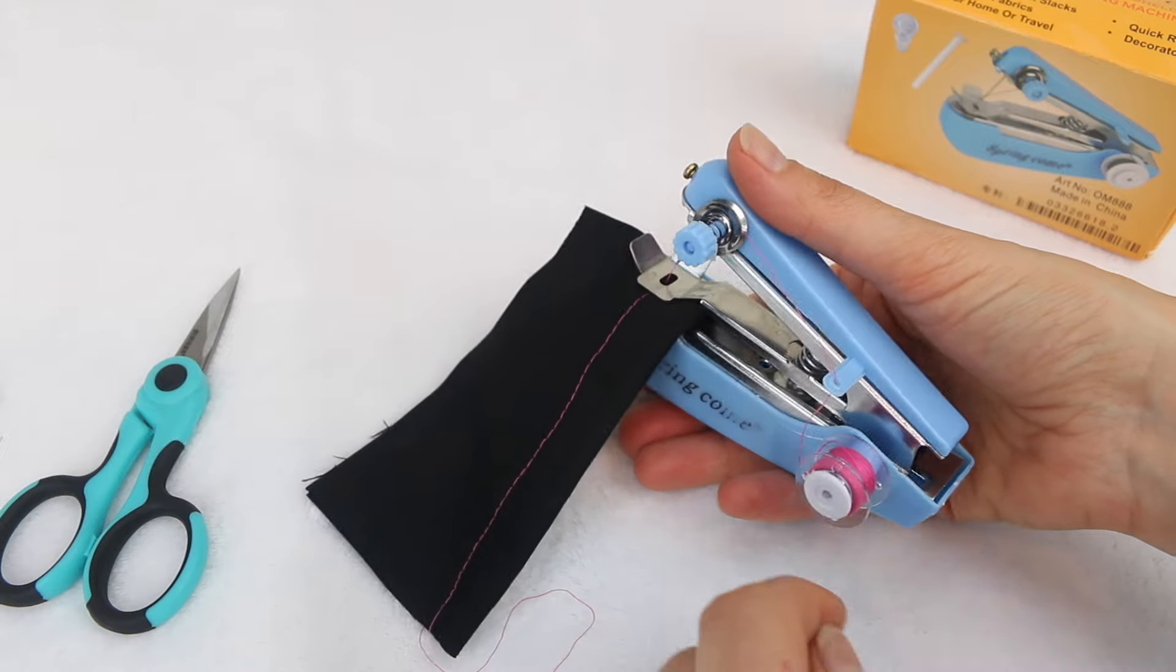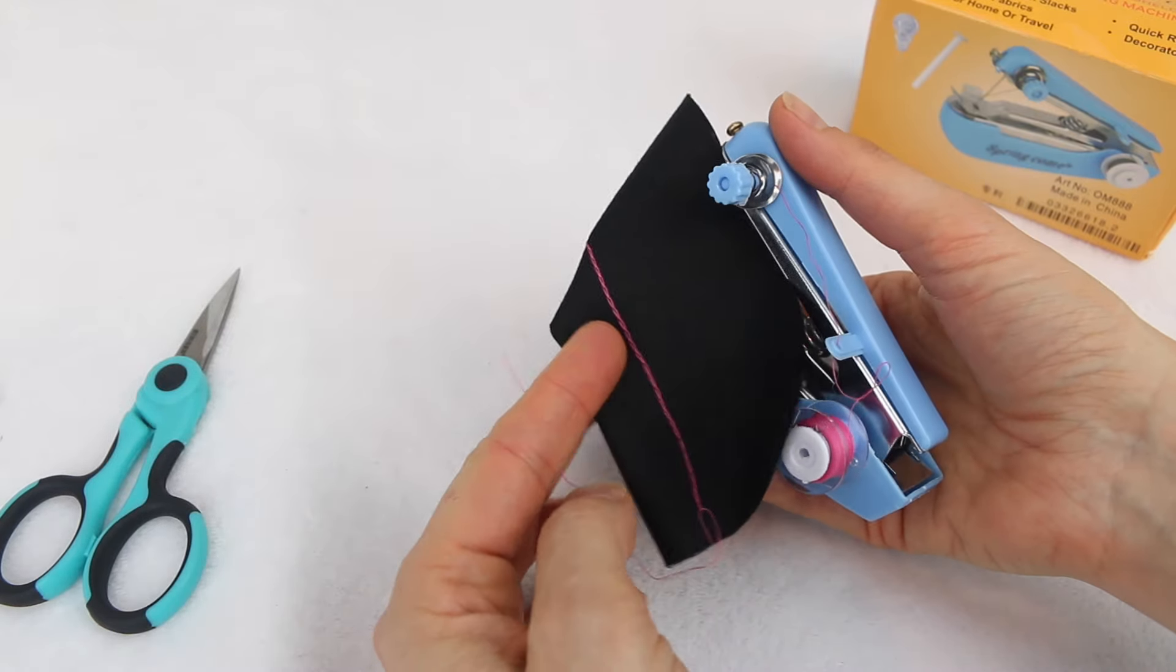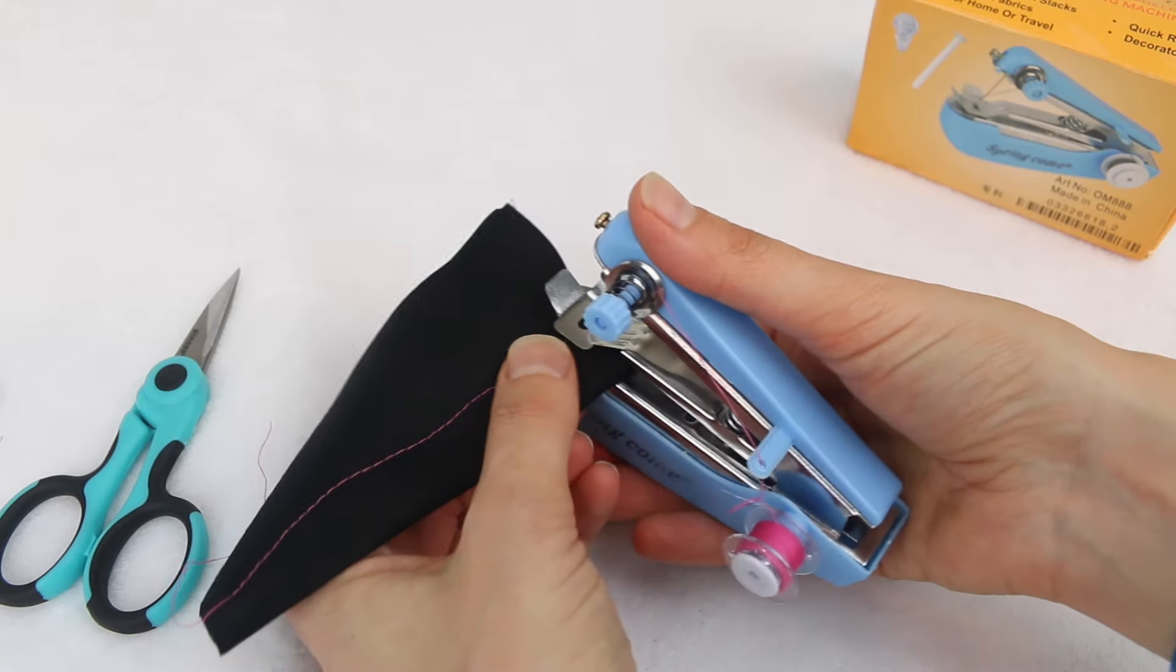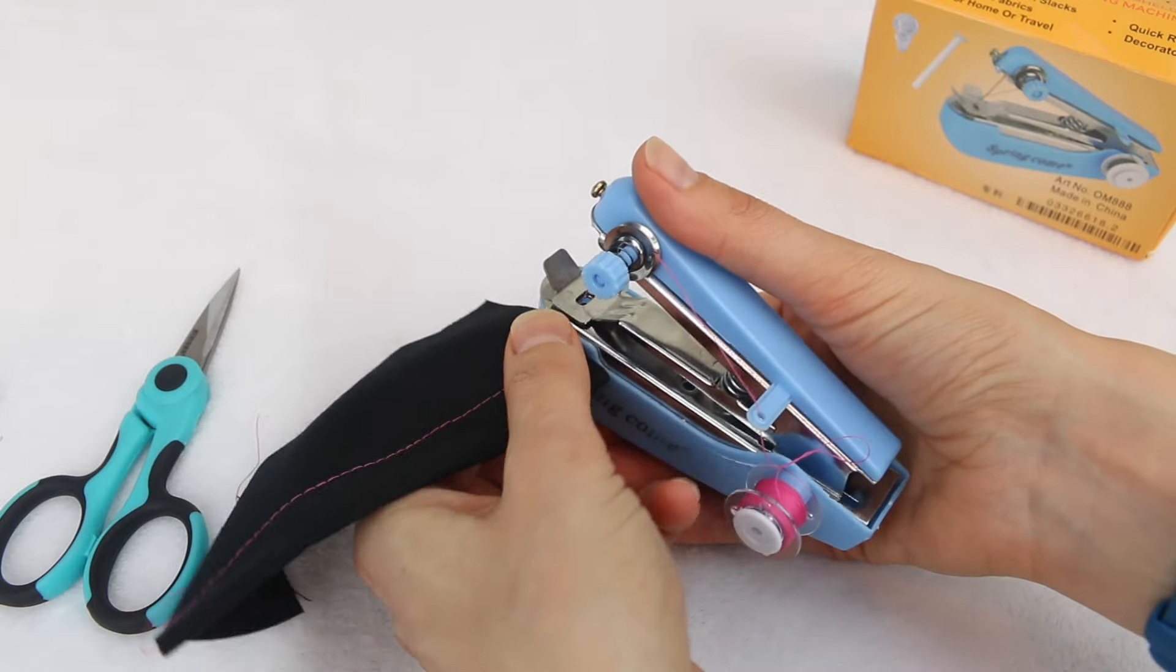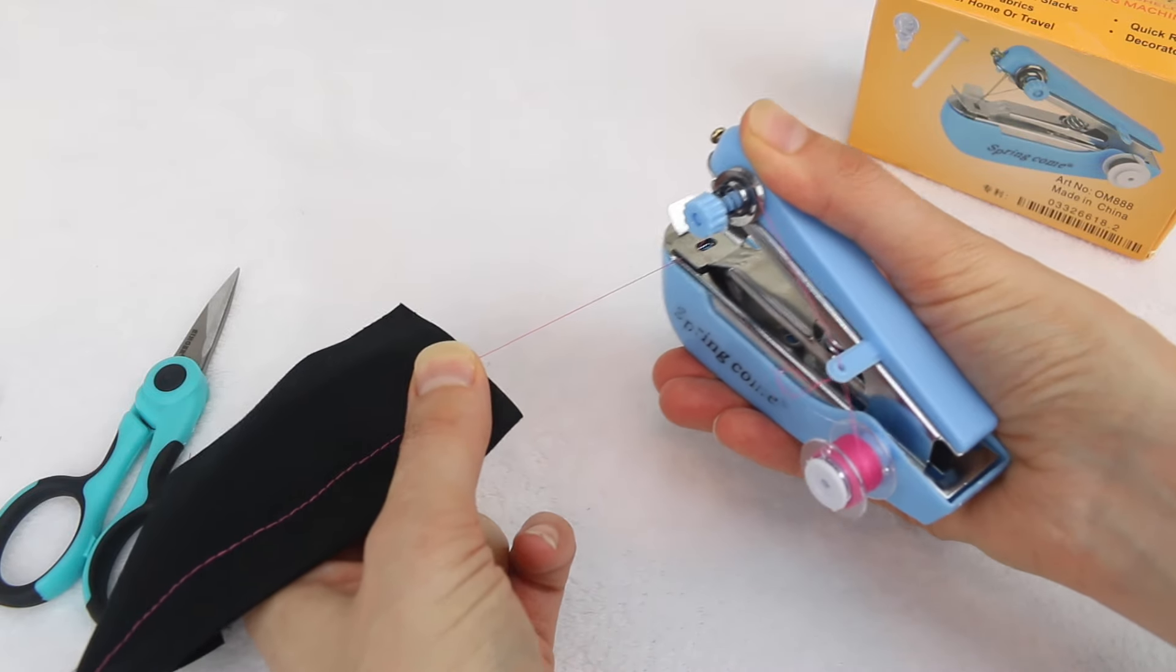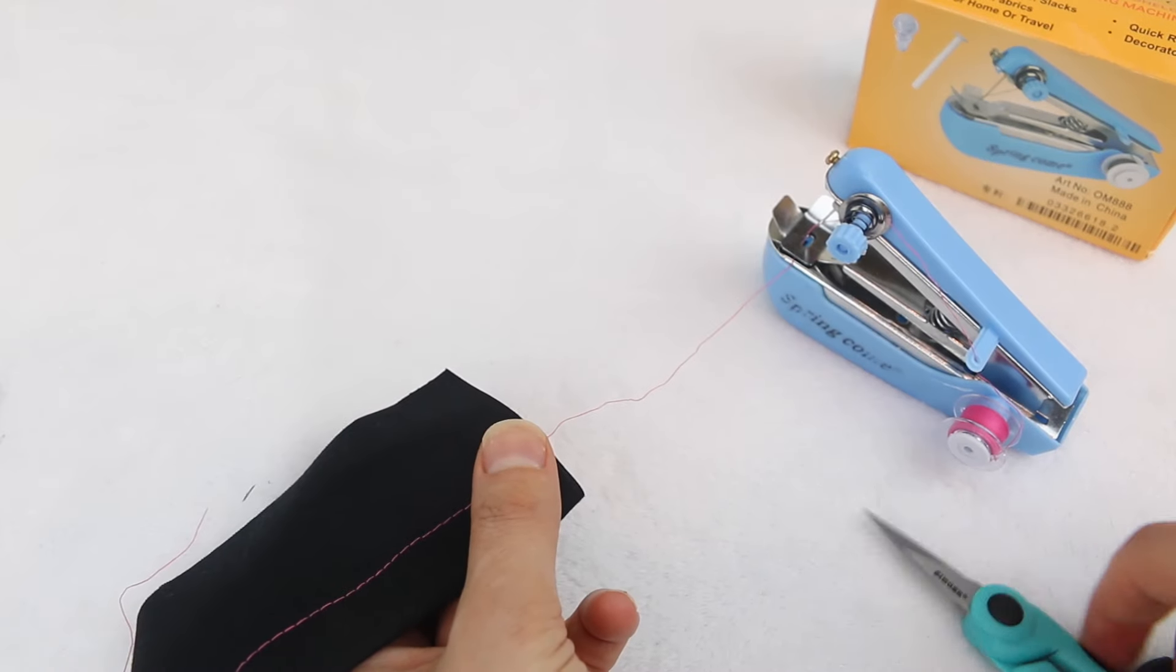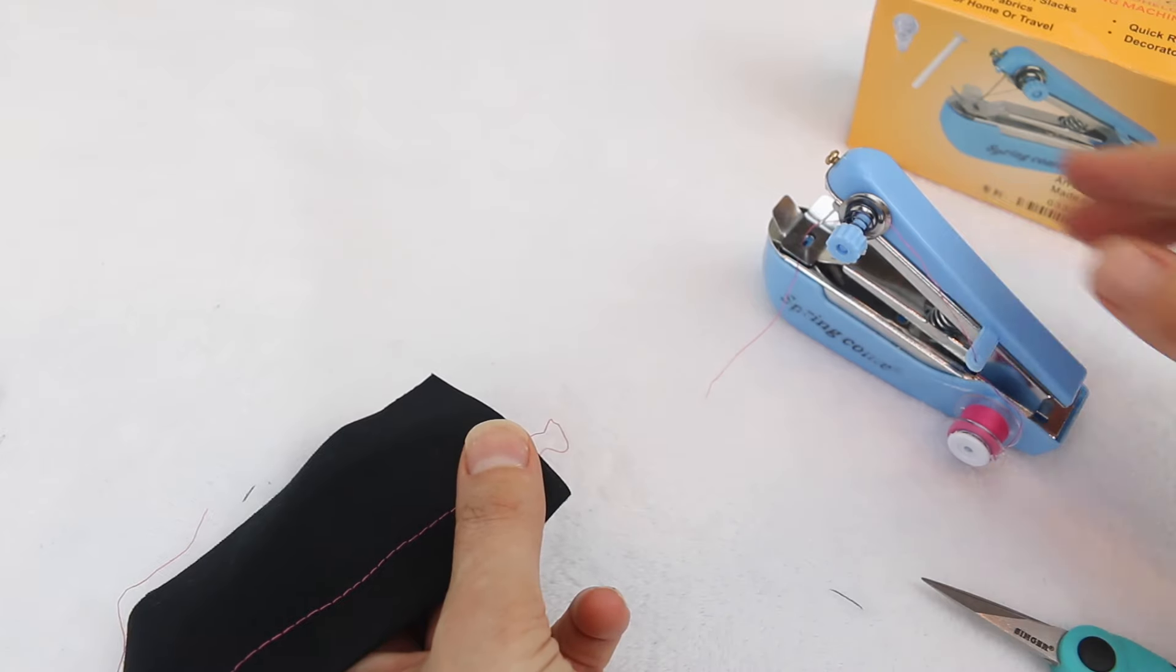Now, when you get to the end of your sewing, an important tip, because this machine does a chain stitch. If you just take your stitching out and pull the thread, it will unravel all of your stitching. So when you get to the end, pop your thumb and finger on the last stitch and then just do another stitch until it releases from the hook underneath like that. Pull it through a little bit and then snip it like that.